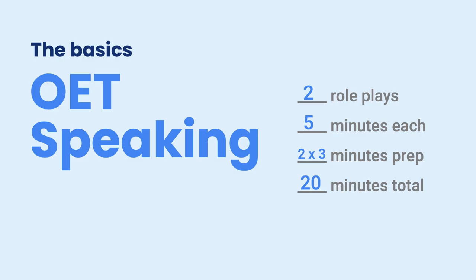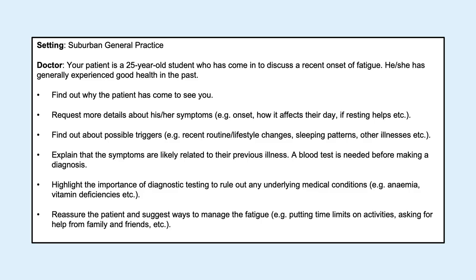So the basics first: in OAT speaking, you will perform two roleplays. Each roleplay will go for five minutes, and you will have two to three minutes to prepare for each of the roleplays. The whole session goes for about 20 minutes in total. This is an example of a roleplay card, and this is what you will look at in the two to three minutes while you prepare for the roleplay. You will also be able to hold this roleplay card and refer to it during the roleplay.